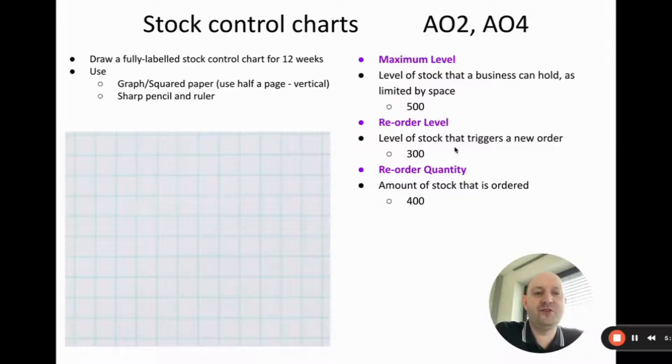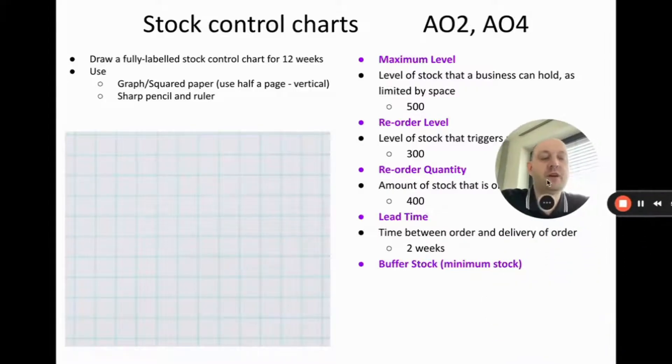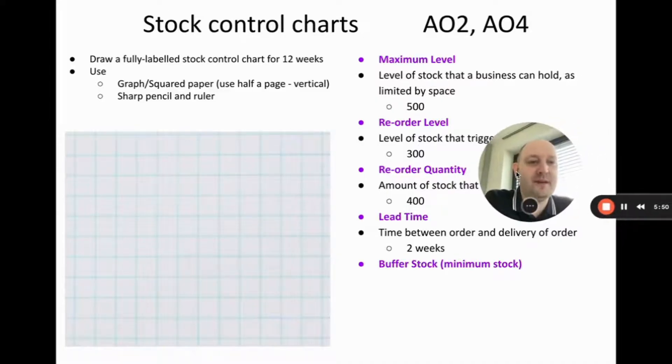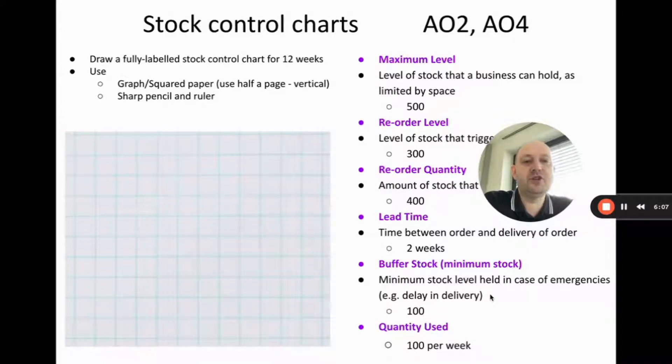Reorder level is the level of stock that triggers a new order. When stock goes below 300, we make a new order. The reorder quantity is the amount that we reorder. When stock goes below 300, we do a reorder and we will order another 400 to be delivered. Lead time is the time between order and delivery of the order. When you make an order it doesn't magically appear, we have to wait for it. In this situation it's two weeks. The buffer stock or minimum is the minimum stock level held in case of emergencies. We don't want to go below that. The quantity used is how much stock we use on average. In this situation we're going to assume we use 100 per week.